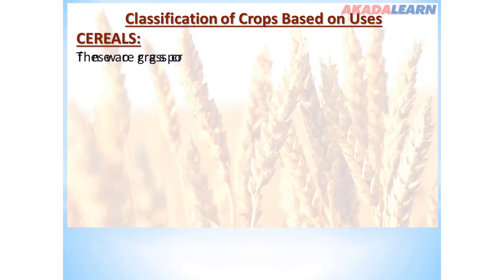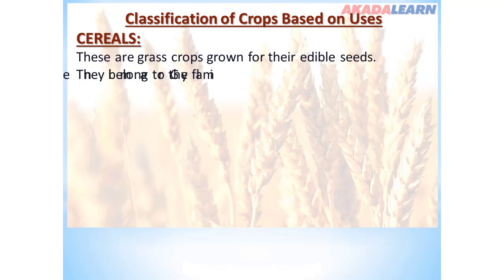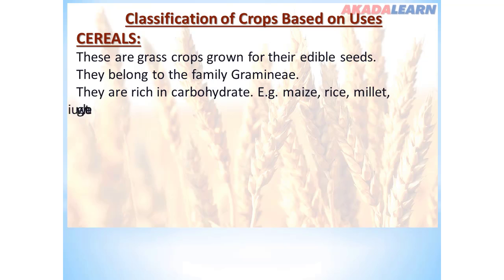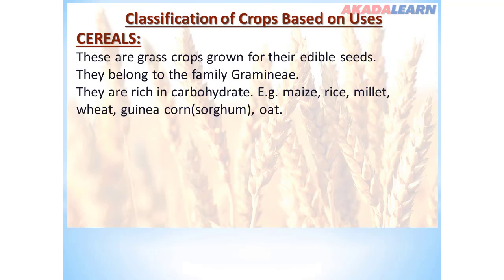Based on uses, we have cereal crops. These are grass crops grown for their edible seeds; they belong to the family Graminae. They are rich in carbohydrates. Examples include maize, rice, millet, wheat, guinea corn (also known as sorghum), and oats.